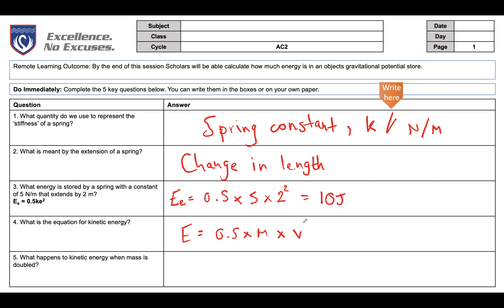What happens to kinetic energy when mass is doubled? If we double the mass, the energy doubles as well. Don't fall into the trap — last lesson I asked about speed doubling, and because speed is squared it increases by a factor of four. But mass is not squared, so if you double it, the energy simply doubles.